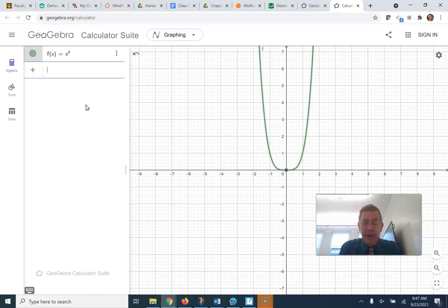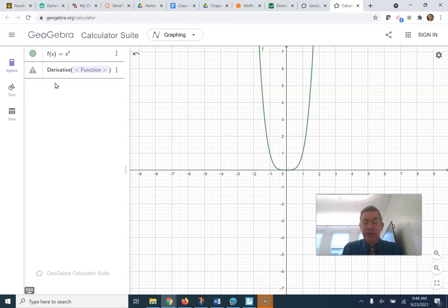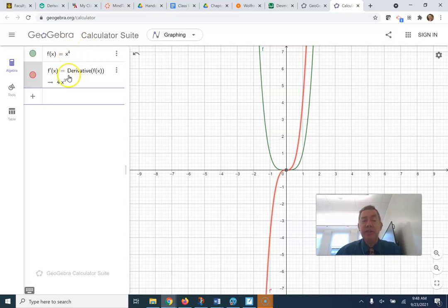Define the derivative. Start typing D-E-R. Derivative of a function. The function I want the derivative of is f of x. There it is. The derivative of x to the fourth is 4x cubed and it graphs the derivative along with the function itself.